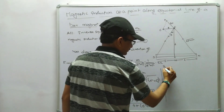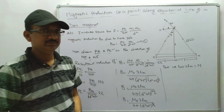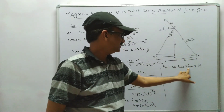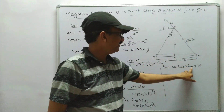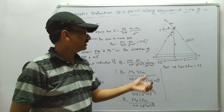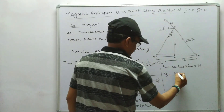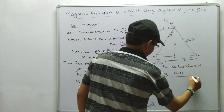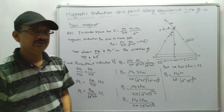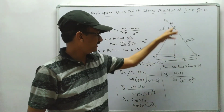We know that 2L × m = M, where L is the half-length of the magnet, 2L is the total length, and m is the pole strength. This product, capital M, represents the magnetic moment or torque of the bar magnet. So the equation becomes: B = (μ₀ × M) / (4π × (d² + L²)^(3/2)). This is the magnetic induction at point P along the equatorial line.